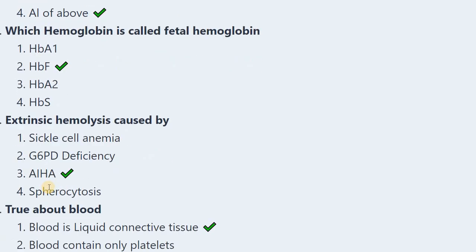Next: Intrinsic hemolysis is caused by — sickle cell anemia, G6PD deficiency (glucose-6-phosphate deficiency), AIHA, or spherocytosis? The correct answer is AIHA (autoimmune hemolytic anemia).